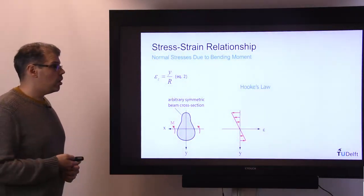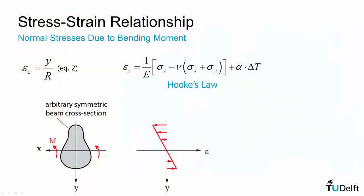Now if we recall Hooke's Law, in the z direction we have this generalized version of it, but in bending we have no normal stresses acting in the x or y direction, and we have no temperature change. So we can eliminate all of these and simply calculate that the normal stress in the z direction is Young's modulus times the strain y/r. So we get a similar linear stress distribution.